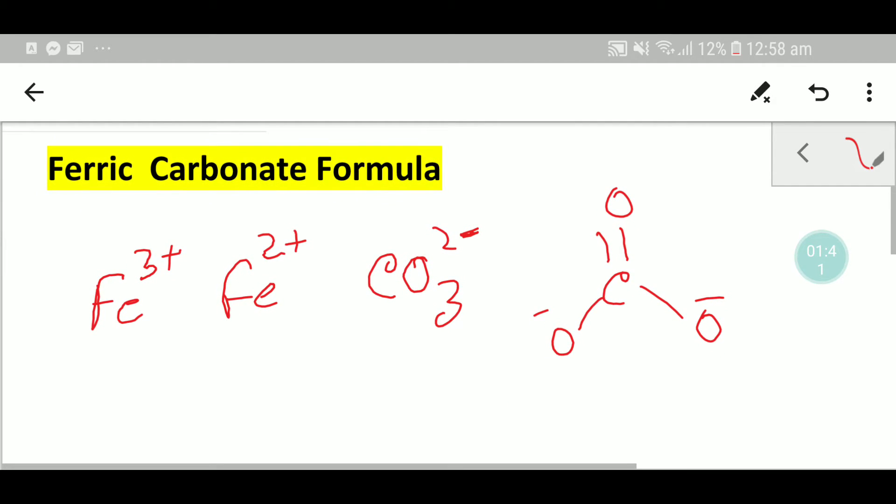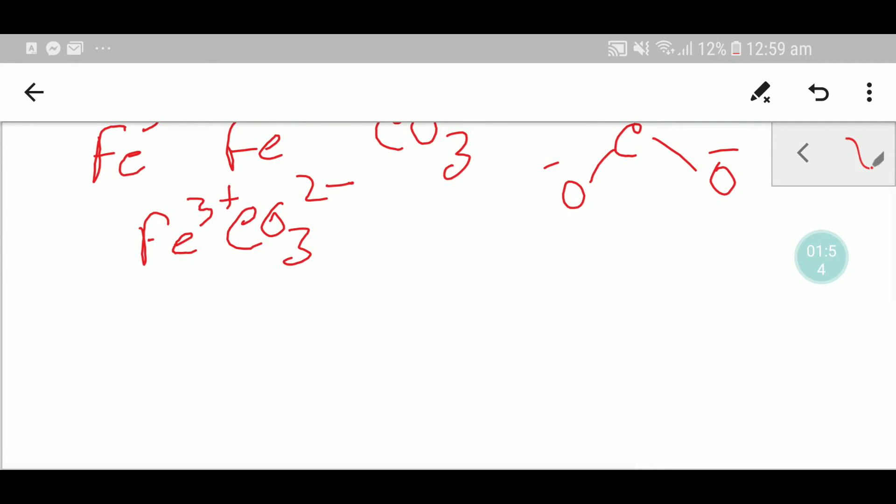So let me take that. We'll write here: this is ferric. And we have to write the formula of carbonate, so this is the carbonate, 2-. Okay, so now we have to use the criss-cross method. The superscript of carbonate will be the subscript of iron, so these two will come here, and the superscript...